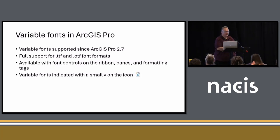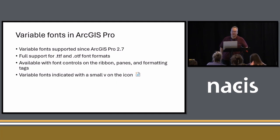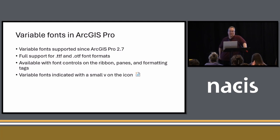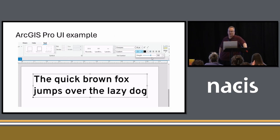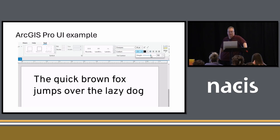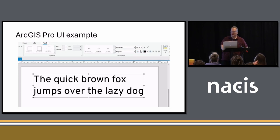We introduced variable fonts in ArcGIS Pro — I was on the team that did that. We introduced them in ArcGIS Pro 2.7, so that was quite a while back. We have full support for both the TrueType OpenType font and the OTF OpenType font. This is available with font controls on the ribbon, panes, and even formatting tags where you can fully control the variations. In the ArcGIS Pro UI, variable fonts are indicated with a small V on the icon, and more UI lights up when you select a variable font. Here we're just changing the weight of a text graphic on a layout, and you can see it updates immediately.